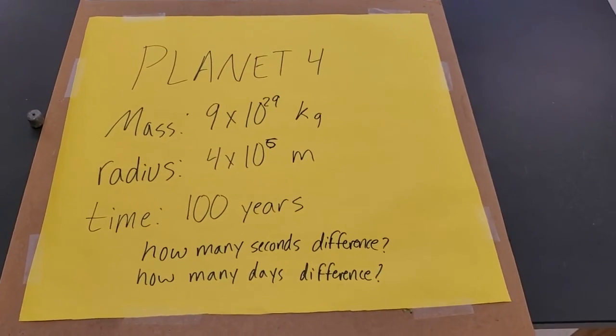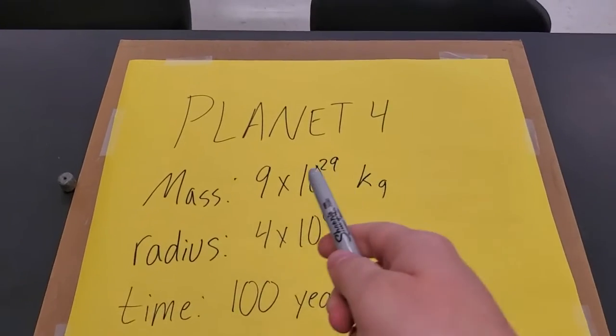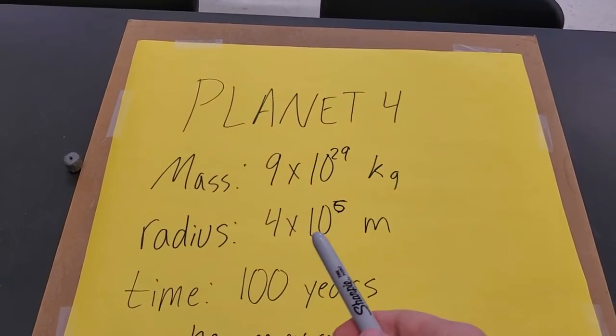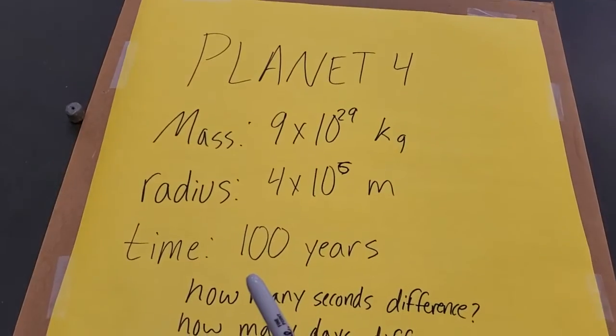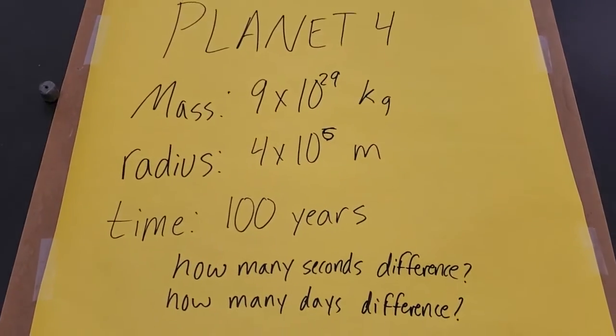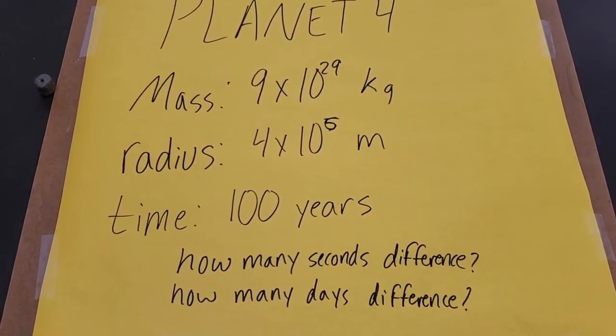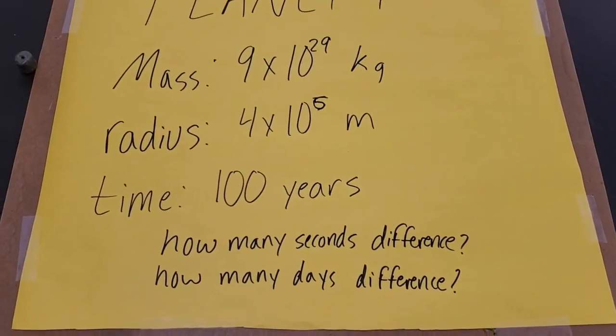Last but not least, we've got planet 4. 9 times 10 to the 29th kilograms, radius of 4 times 10 to the 6th, with a time spent of 100 years observing it. How many seconds difference? How many days difference? Good luck.